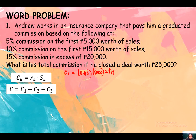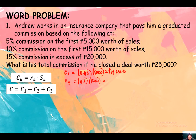0.05 times 5,000 equals 250 pesos. On his second commission, that is 10%, which is 0.1 times 15,000. Check carefully when you are encoding numbers in your calculator. So it is 1,500 pesos — the 10% of 15,000 is 1,500 pesos.